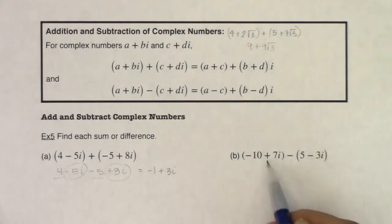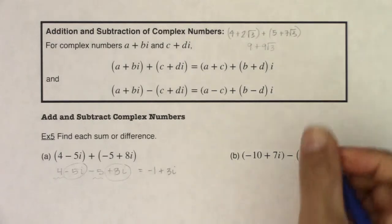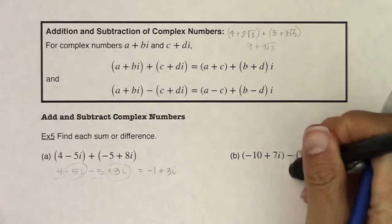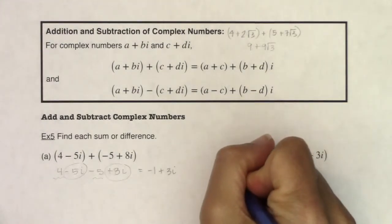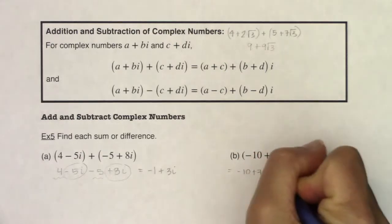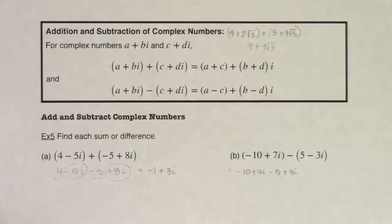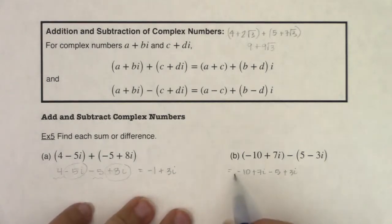So if we look at b, I'm subtracting these complex numbers. And all we have to do, we just have to be careful to distribute that negative to both the 5 and the negative 3. Because really you have a negative 1 out here, and you're multiplying that, you're distributing that to your binomial. So let's try this. I'm going to remove the parentheses. So I'm looking at negative 10 plus 7i. This will be minus 5. But negative 1 times negative 3i is positive 3i. And then we're back to our basic add the real parts and add the imaginary parts. So I see negative 10 and negative 5. So we got negative 15. I see 7i plus 3i. So I'm looking at plus 10i.